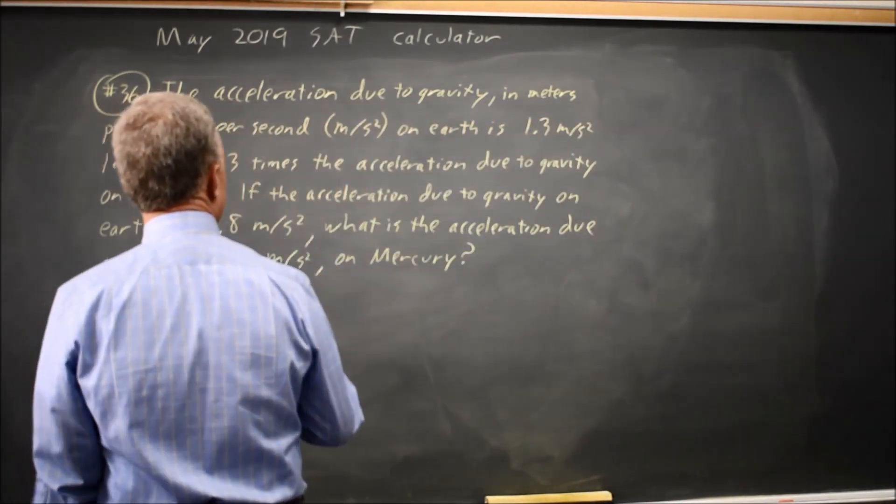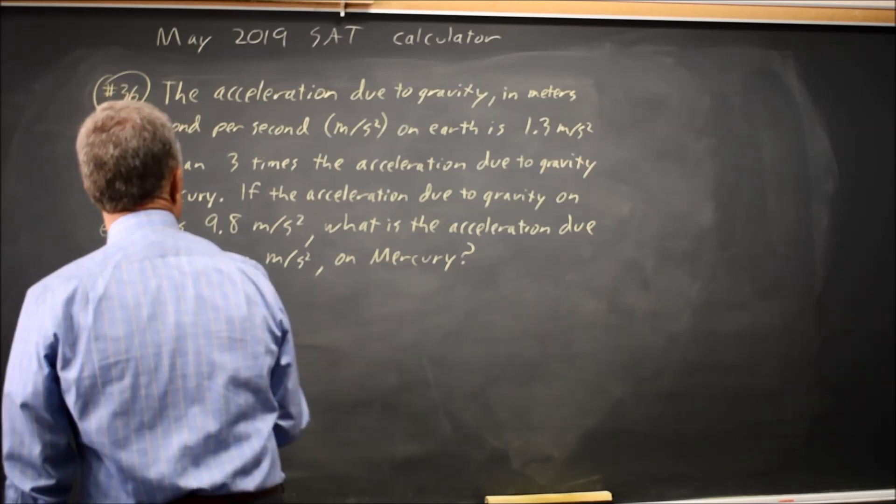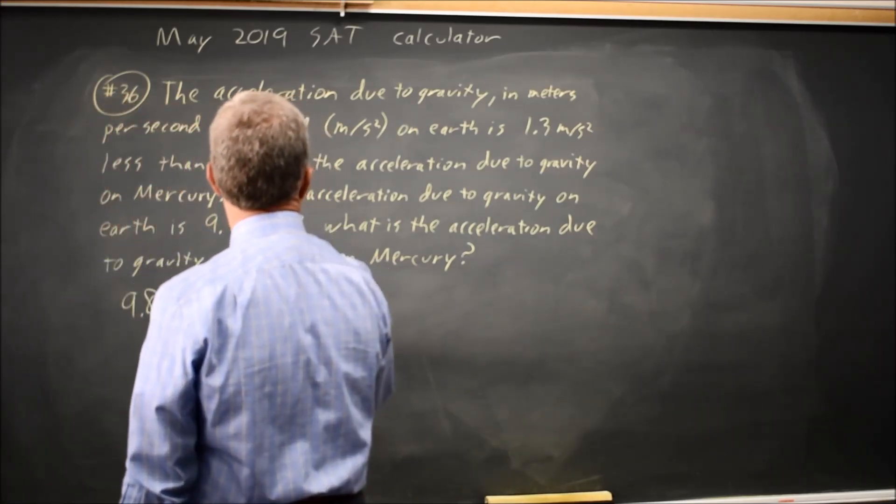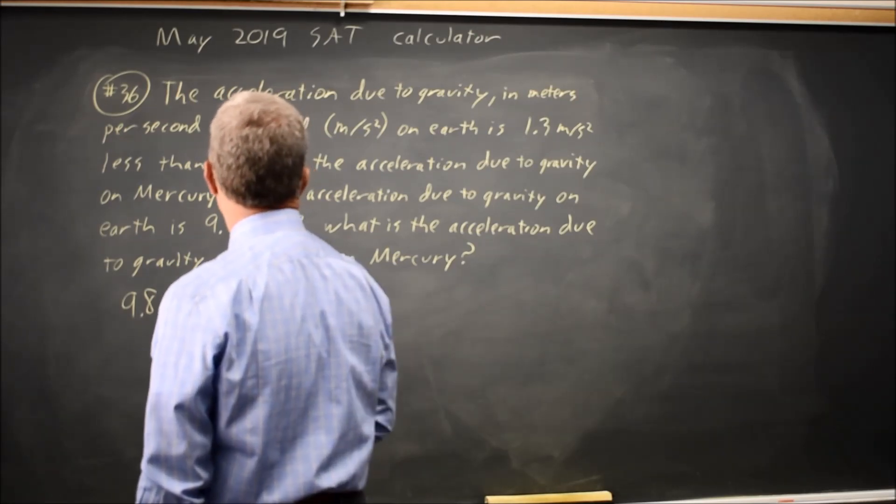We're given that the acceleration on Earth is 9.8 meters per second squared and we're given that the acceleration on Earth is 3 times the acceleration on Mercury, which I'll just call x.